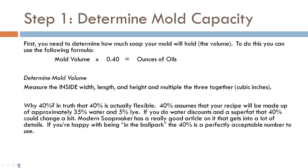Why do we choose 40%? It seems random. Basically, it's assuming that 40% of your recipe will be made up of approximately 35% water and 5% lye. If you do a water discount or change your super fat, that could change. That 40% is very flexible, but it's a good place to start. Modern Soap Making has a great article on this — I'll link it below. If you're happy being in the ballpark, 40% is great. If you want to be super precise, check out that post for more detailed math.